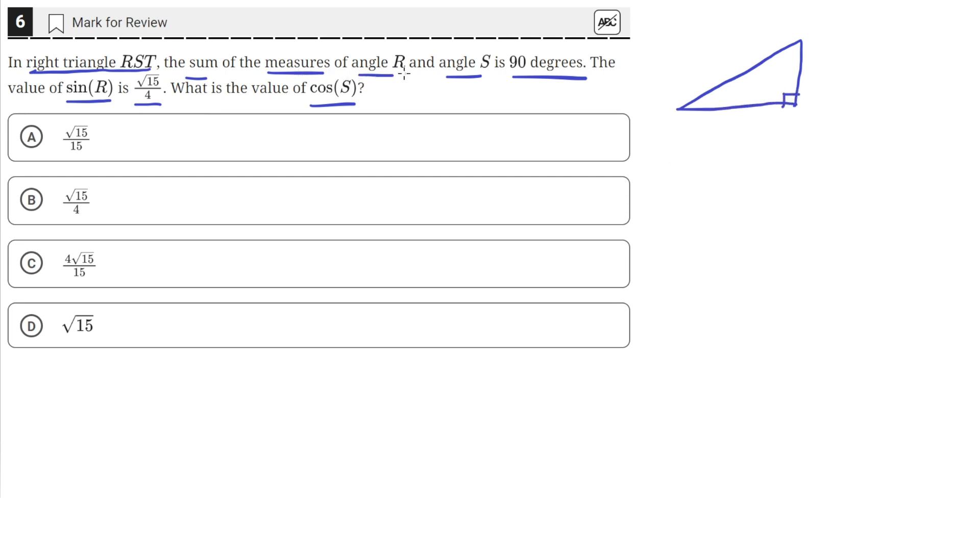They tell us that the sum of the measures of angle R and S add up to 90. Since it's a right triangle, it means that R and S must be these two angles here. You could swap them around, it won't really matter.